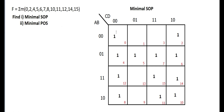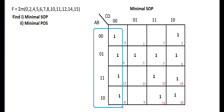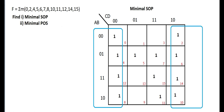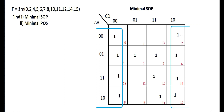Now see — adjacent ones. Whenever you see adjacent cells, you can group them, but you have to check the position. These ones are adjacent and they are at the edge, so you have to check the opposite edge. The opposite edge also has four ones, so we can group these four ones and those four ones together as an octet.